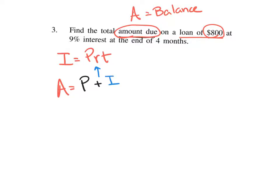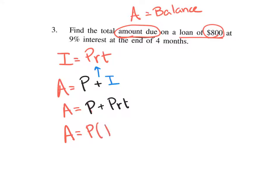We can simplify the formula. We know I is PRT, so we have P plus PRT. Using a little bit of algebra, both parts of the equation have a P in it, so we can factor that out. Factoring out P, you get A equals P times 1 plus RT.